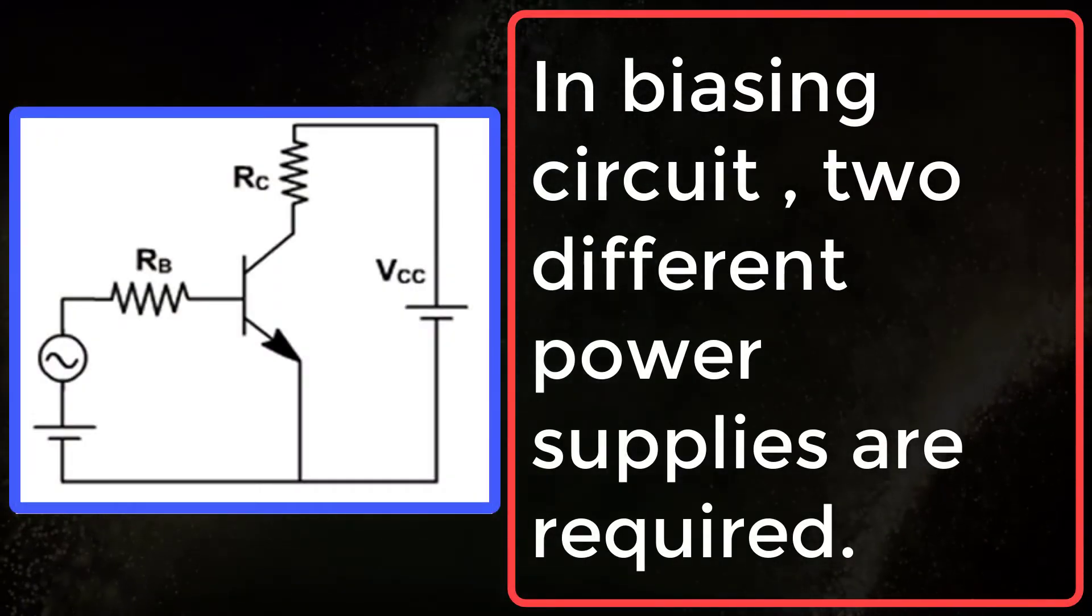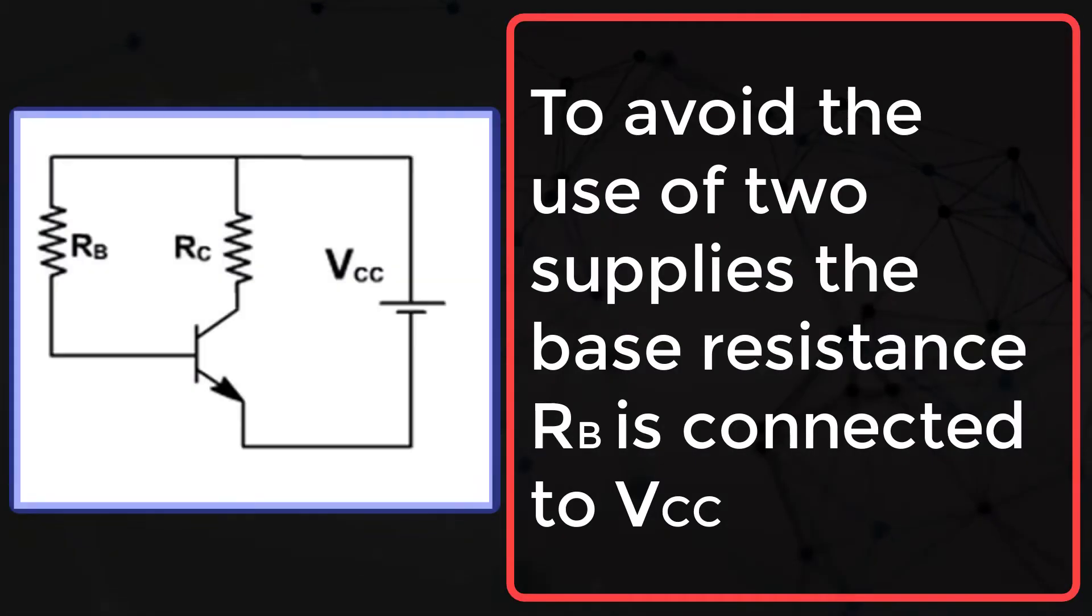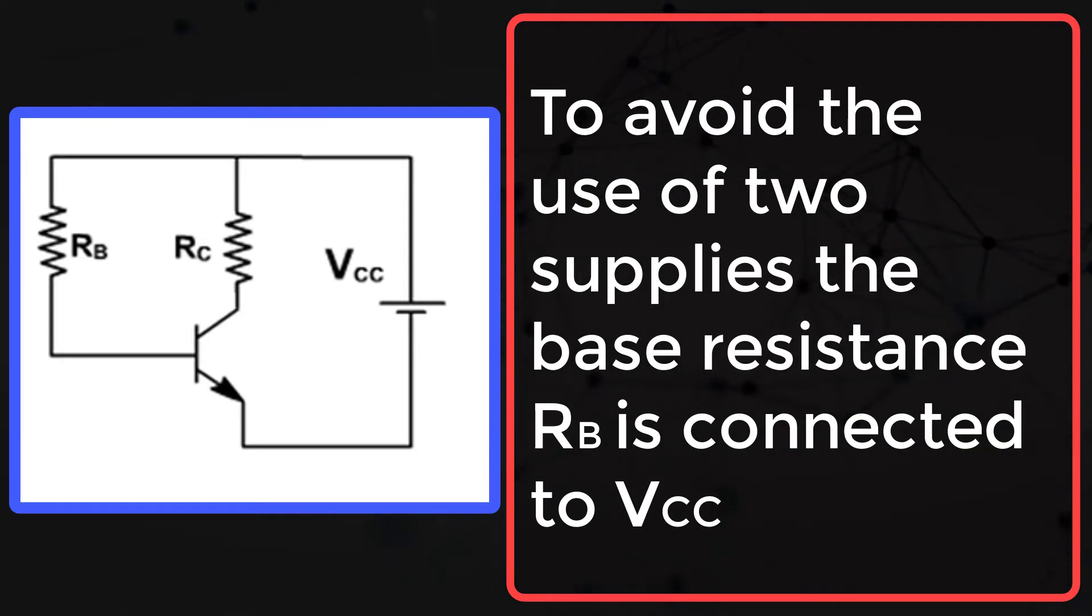In biasing circuit as shown, two different power supplies are required. To avoid the use of two supplies, the base resistance RB is connected to VCC as shown here.